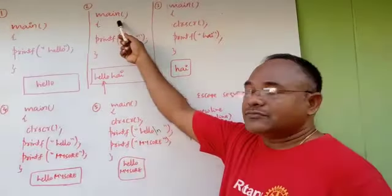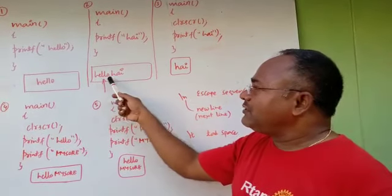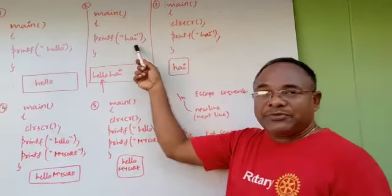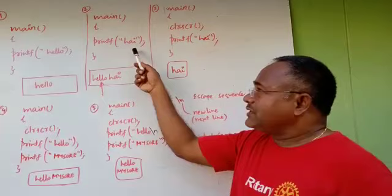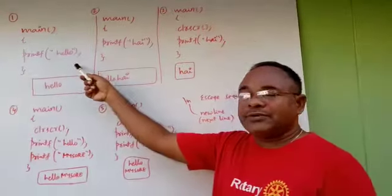Look at program 2. Here within double quotations high is there, but still output is hello high which we are not supposed to get. We are supposed to get only high. And why? Because once you are working with any particular program, it shows the output of earlier program also.